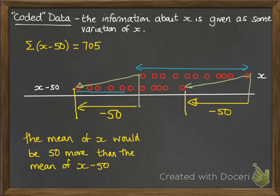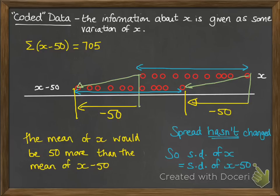Now if we think about the standard deviation, the spread of the data hasn't actually changed, it's just moved down the scale. So the standard deviation of x will be the same as the standard deviation of x minus 50.